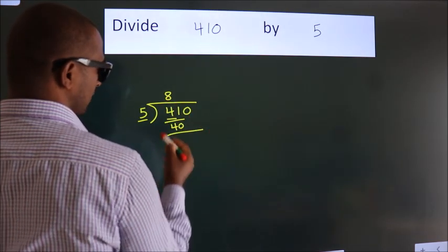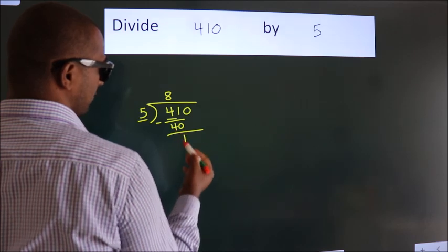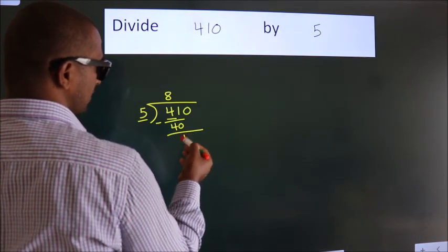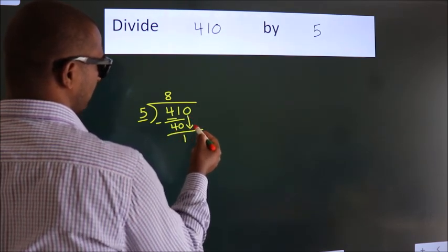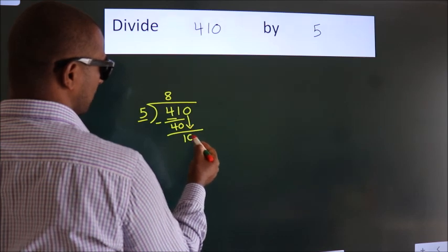Now we should subtract. We get 1. After this, bring down the beside number. So 0 down. So 10.